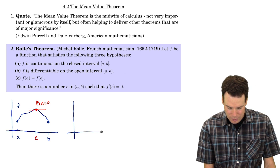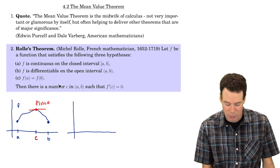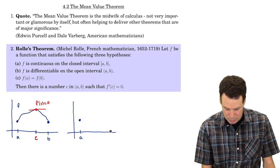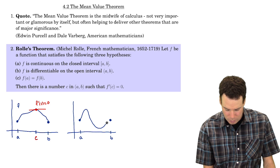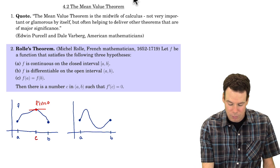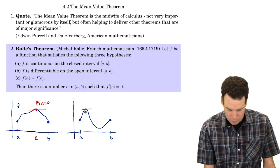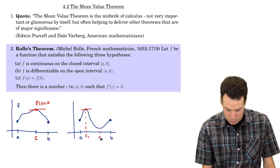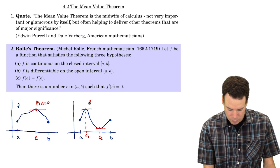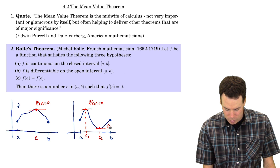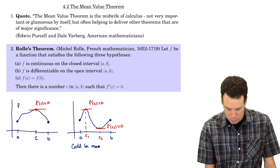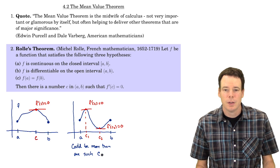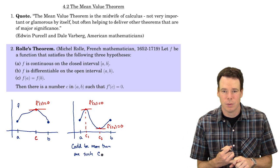Notice it just says there is a number c — there could be more than one. For example, a function could go up and then down and end at the same height, giving two places where the derivative is zero: c₁ and c₂, where f'(c₁) = 0 and f'(c₂) = 0. So Rolle's theorem says you have at least one value where the derivative is zero, but there could be more than one.